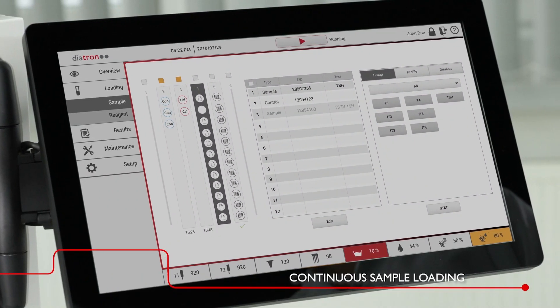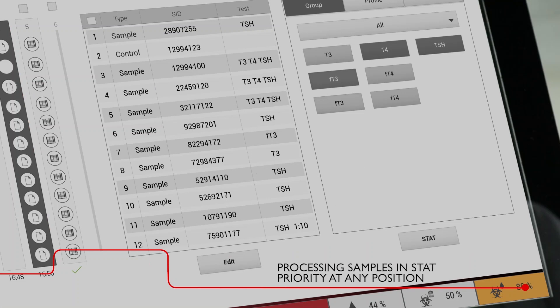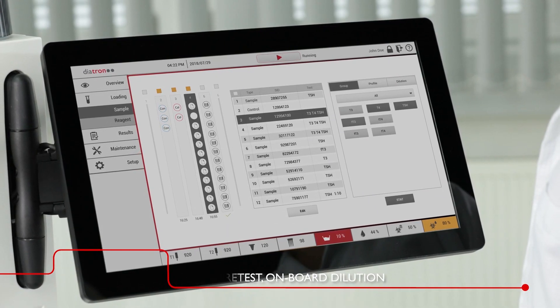The work list can be obtained from an LIS or entered manually. The system allows for stat samples to be assigned at any position and automates the management of reflex, retest and dilution testing.